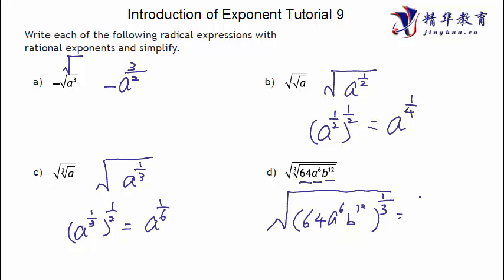We can do something here. 64 to the power of 1 third, which is how much? Which is cube root of 64, it is just equal to 4. A six to the power of 1 third, just a six times 1 third equal to a square. And then B 12 to the power of 1 third equal to B 12 times 1 third equal to B fourth.